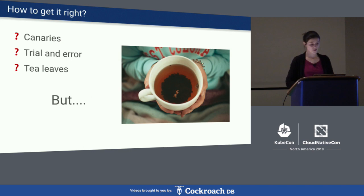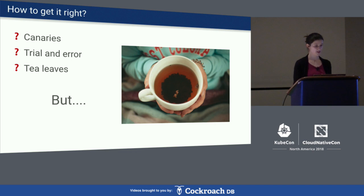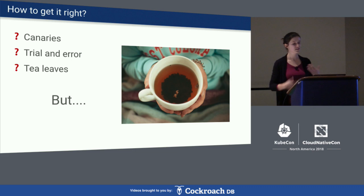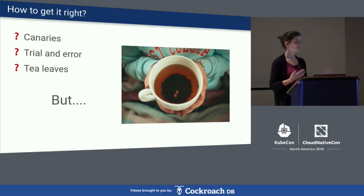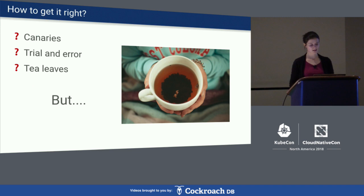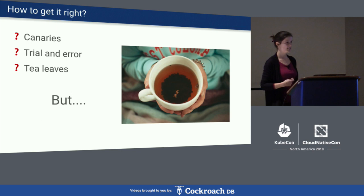What can we do about it? How can we set resource requests right? There are a couple of ways: you can try canary deployments, simulate production load, and set requests for production workloads based on that. You can also go with a trial-and-error procedure — deploy with some requests, see if workloads are happy, look at actual usage, and figure it out on the way. You can also just try to guess, which is a bit frightening but understandable given how hard it is.